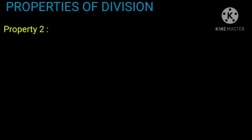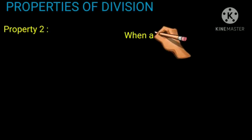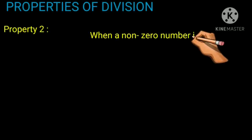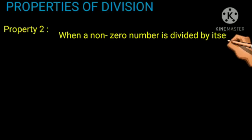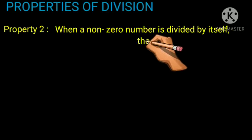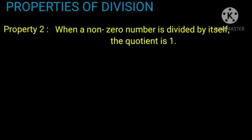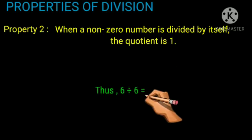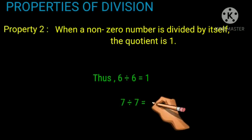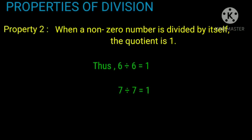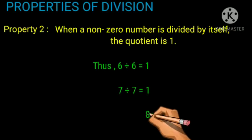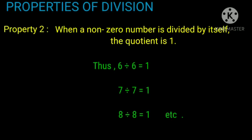Property 2: When a non-zero number is divided by itself, the quotient is 1. For example, 6 divided by 6 equals 1, 7 divided by 7 equals 1, and 8 divided by 8 equals 1.